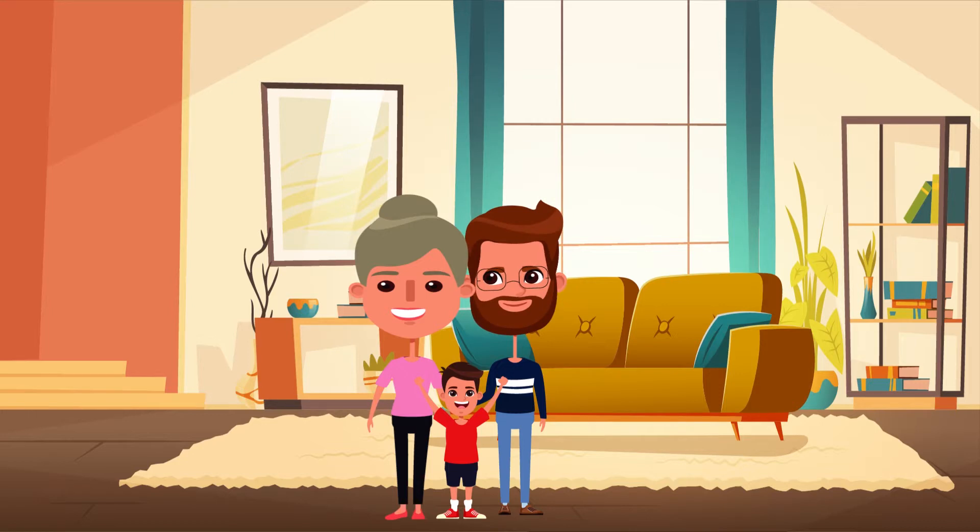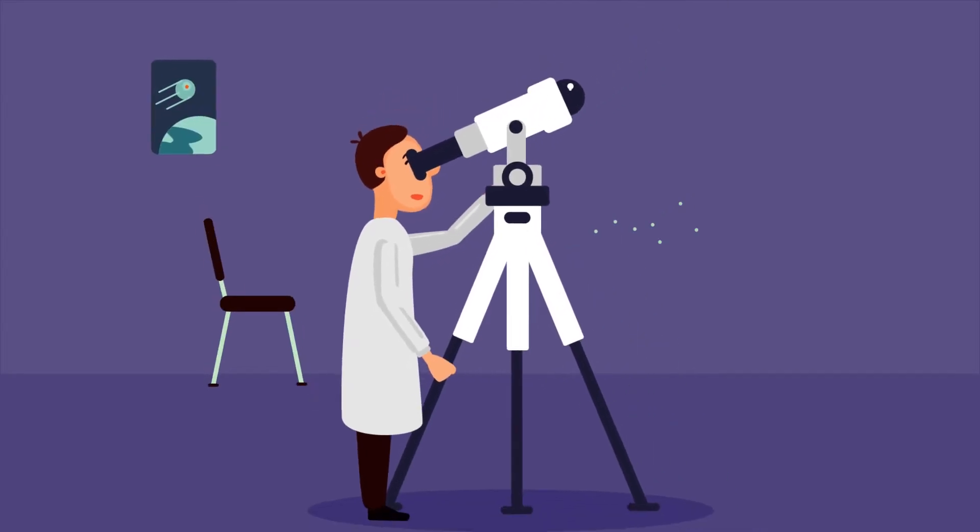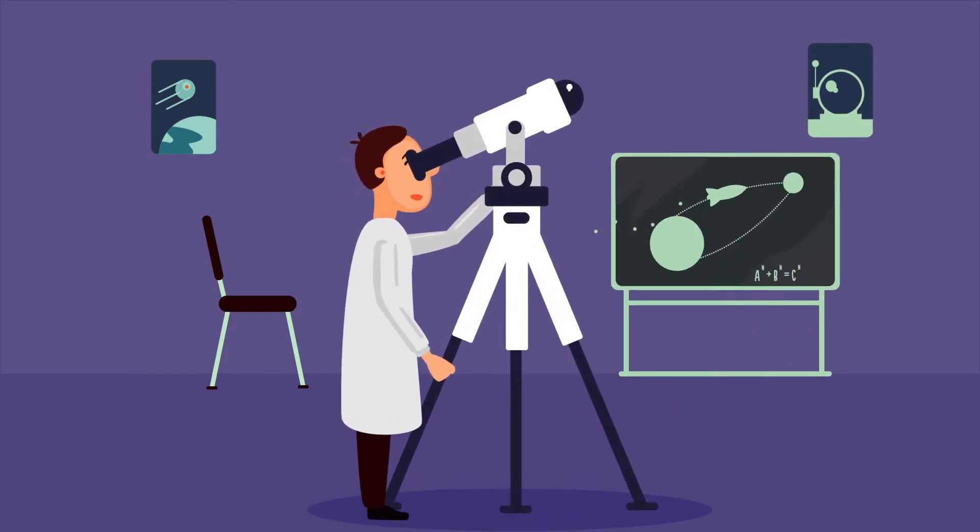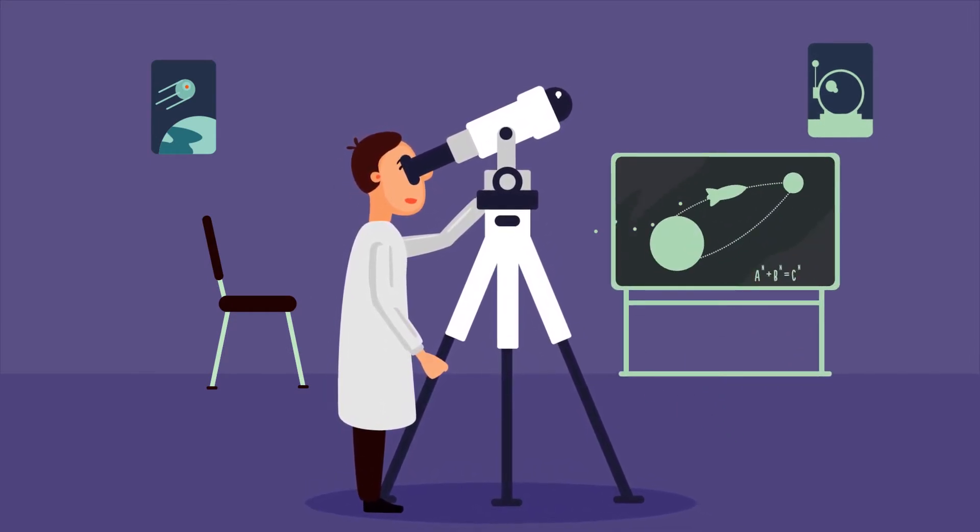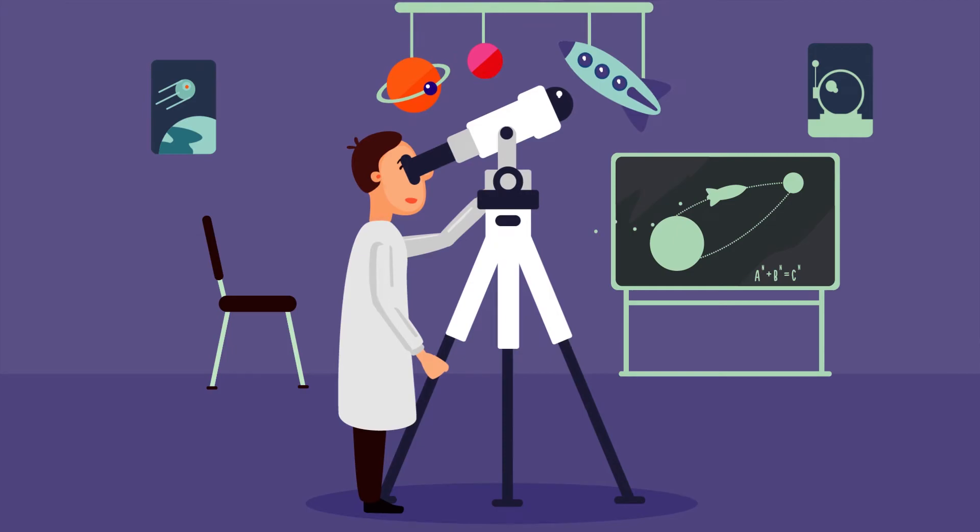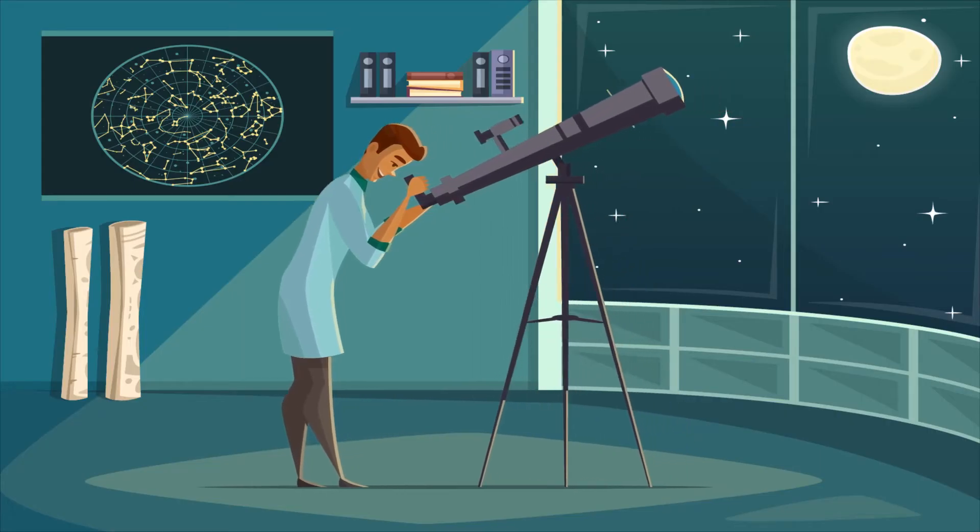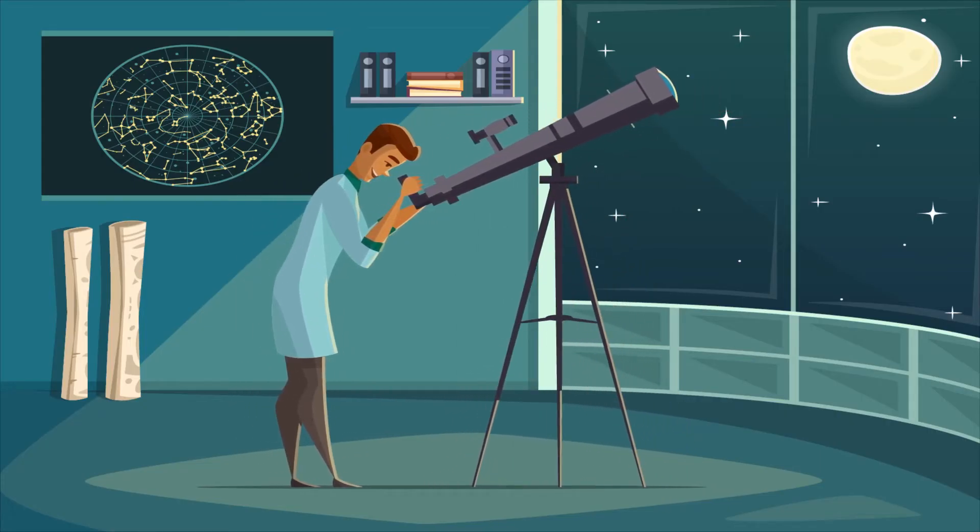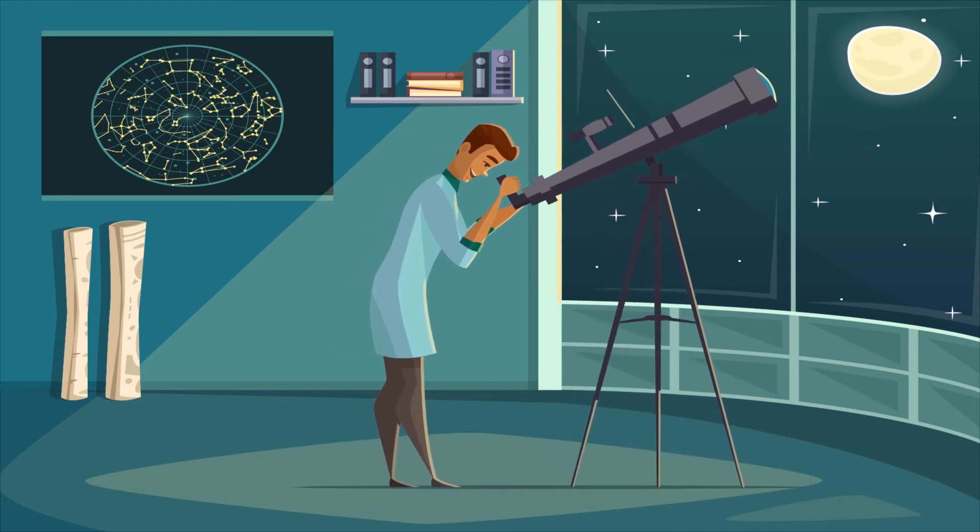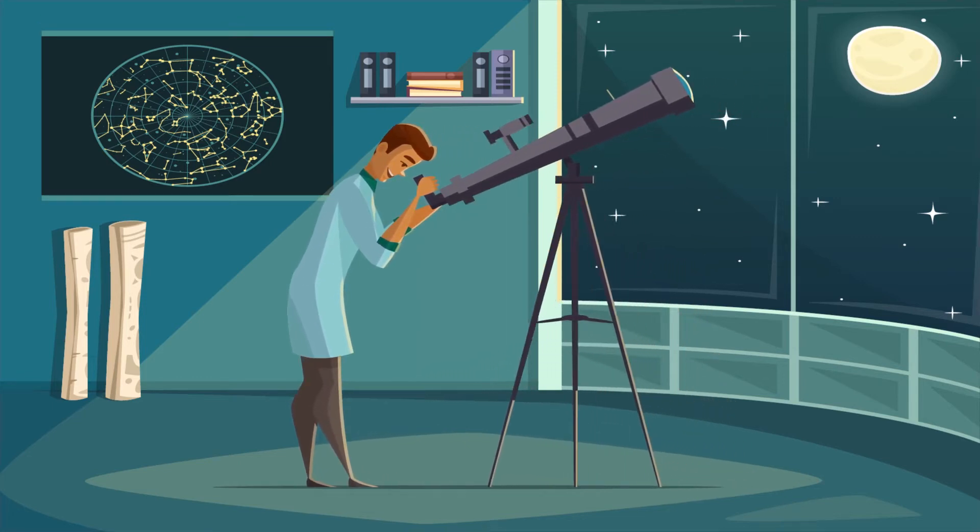His childhood obsession with the study of astronomy earned him fame in the astronomy community when at age 15 he began giving lectures on astronomy. This attracted the attention of astronomer Carl Sagan, the faculty member at Cornell University who wanted Tyson to get admission to Cornell for his undergraduate studies.